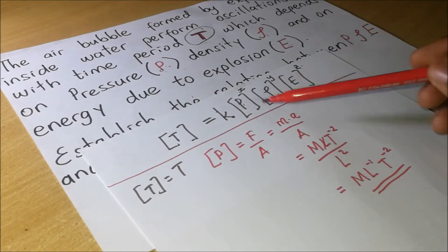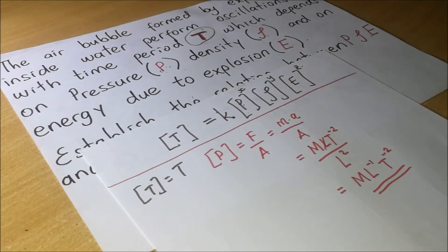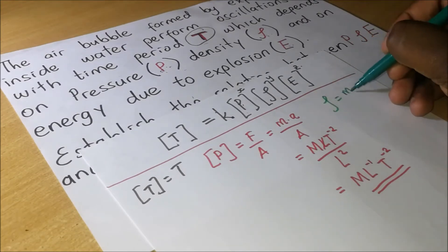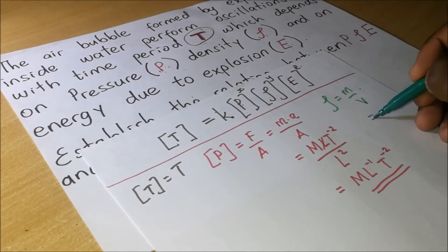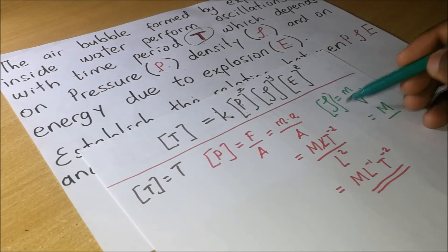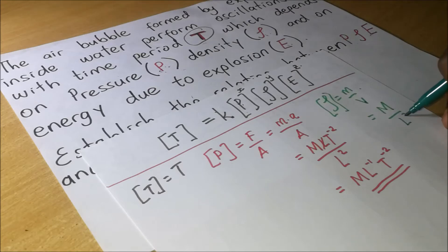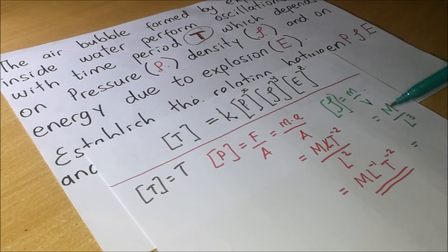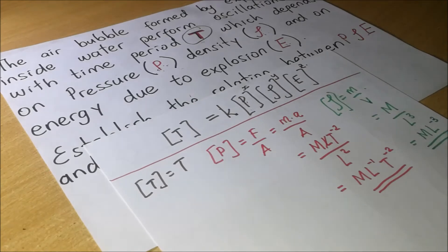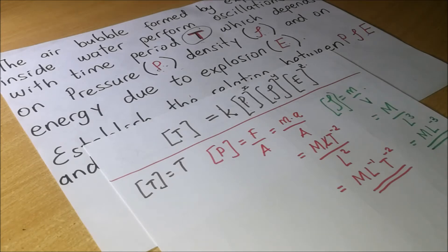Now let's find the dimensions of density. Density is mass divided by volume. Mass is M and volume is L³, so the dimensions of density are ML⁻³.